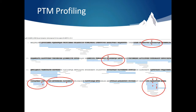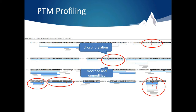PTM profiling works with all PTMs, but in this example we will look at phosphorylation. In this protein, there are several phosphorylation sites. However, unmodified peptides were found at those positions as well.